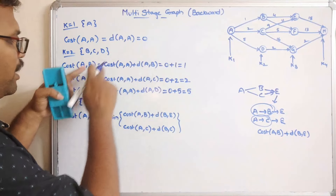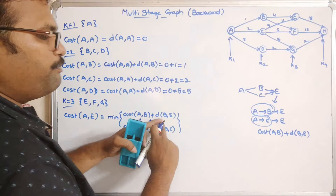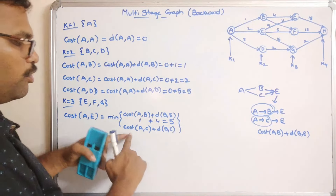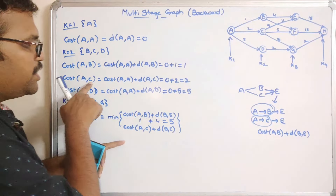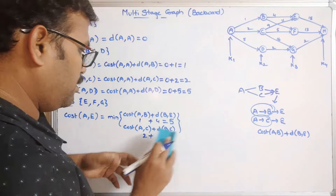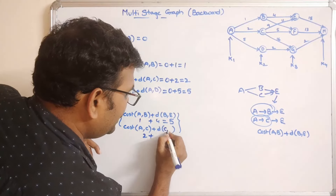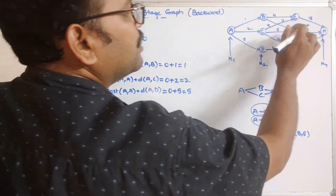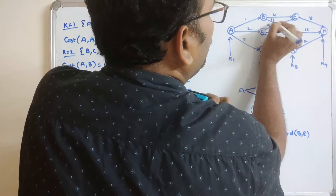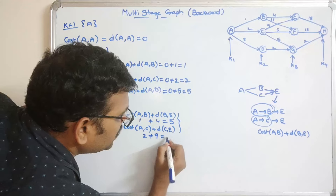Cost(A, B) is already computed as 1, plus distance(B, E) which is 4, giving 5. Cost(A, C) is already computed as 2, plus distance(C, E) which is 9, giving 11. So we need to find the minimum among these two. The minimum is 5, so cost(A, E) = 5.